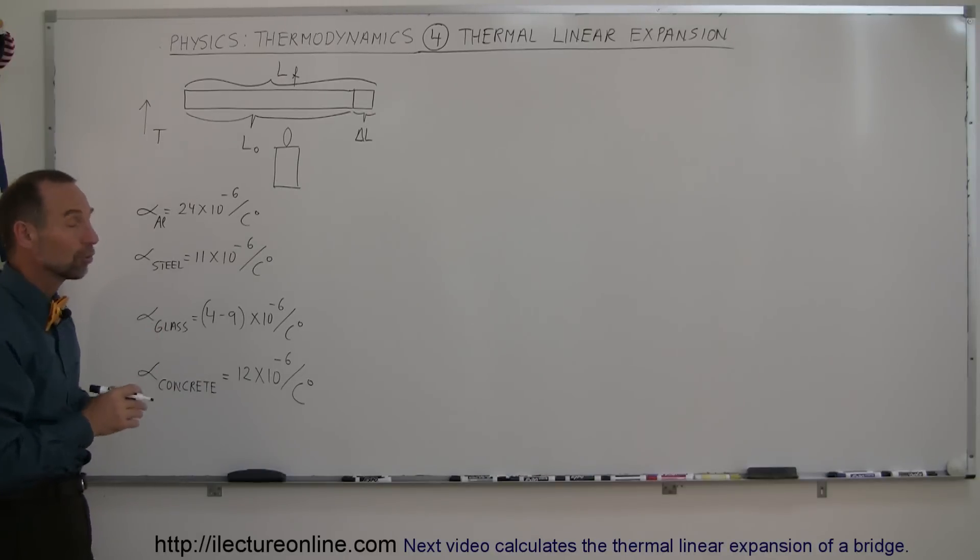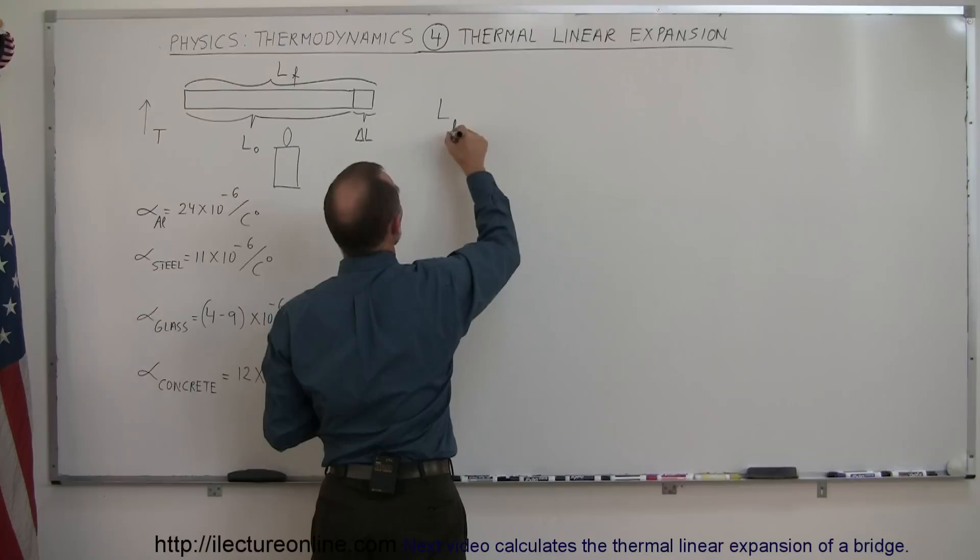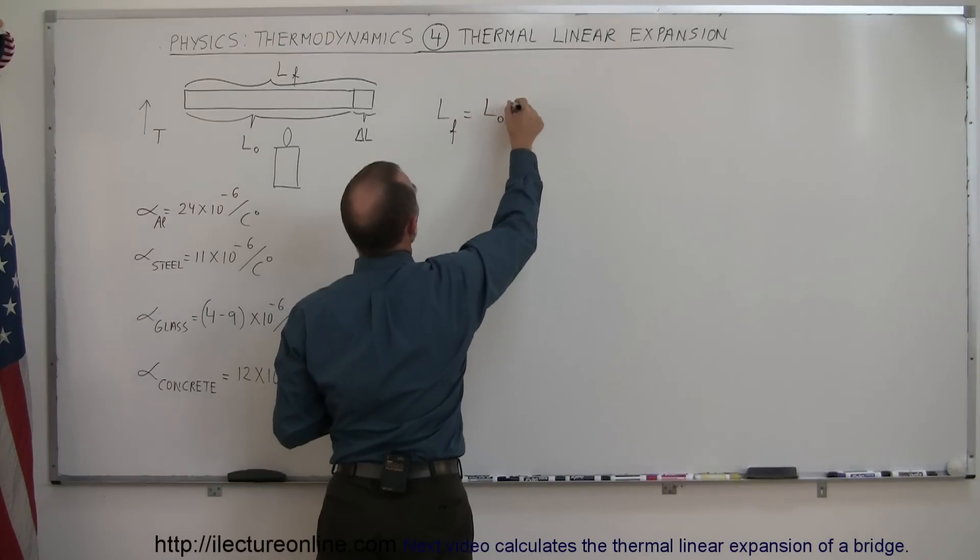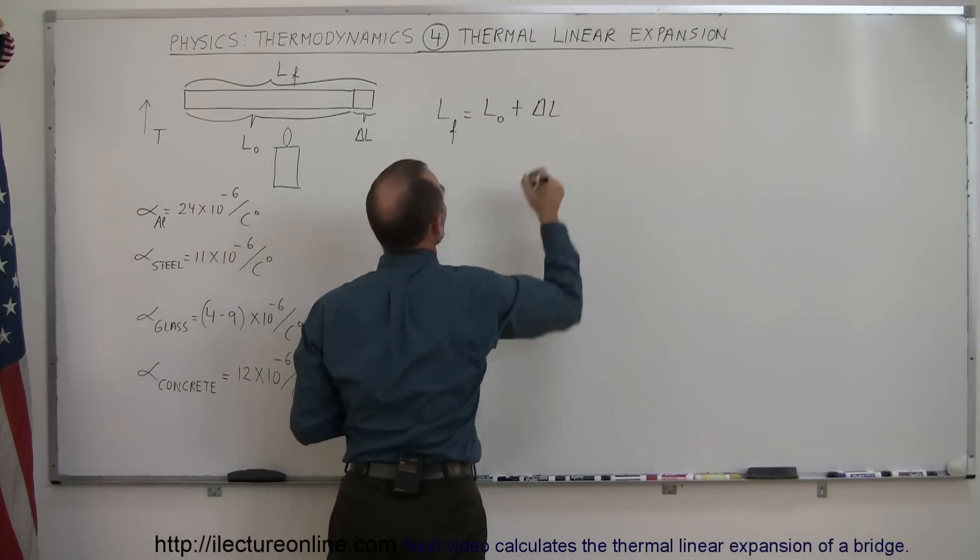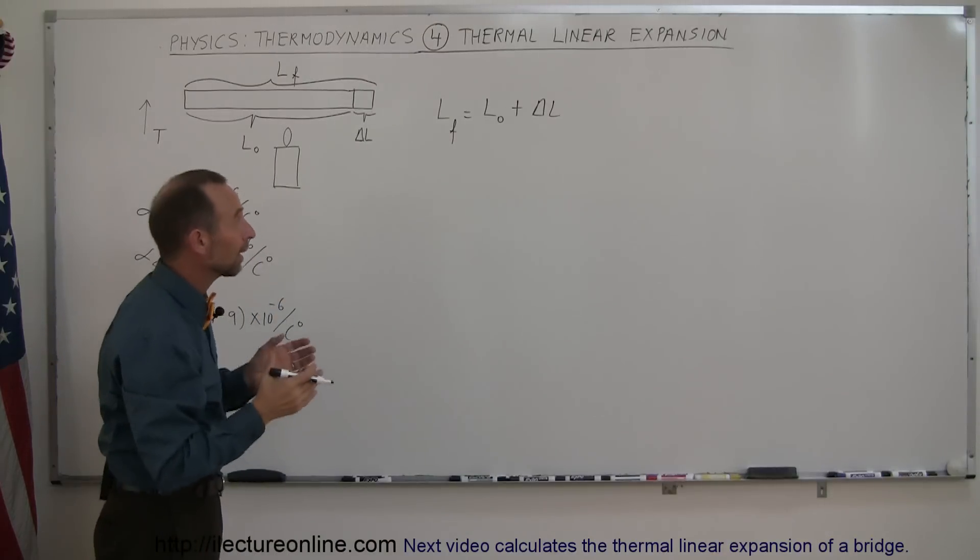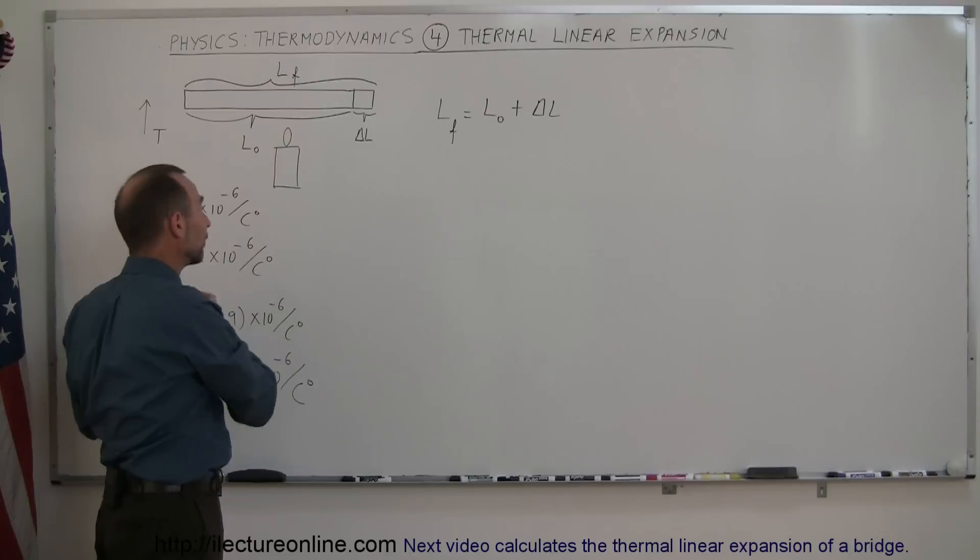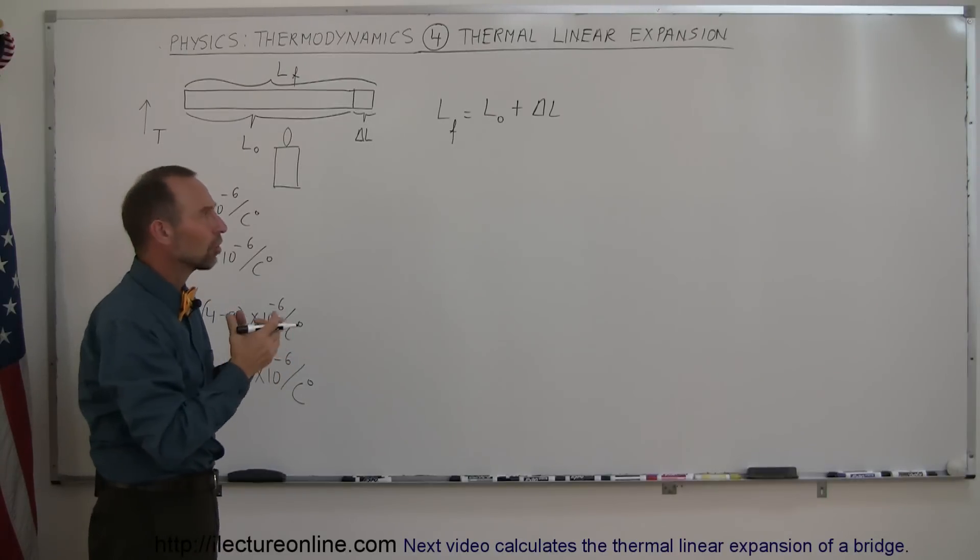So let's now write down the equation. We can say that the final length of an object will be equal to the initial length plus the change in the length of that object. So what causes the change in the length? Well, it's caused by however long it is initially, it's caused by what the coefficient of linear expansion is, and it's also caused by the change in the temperature.